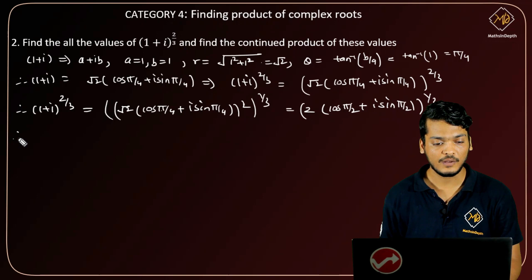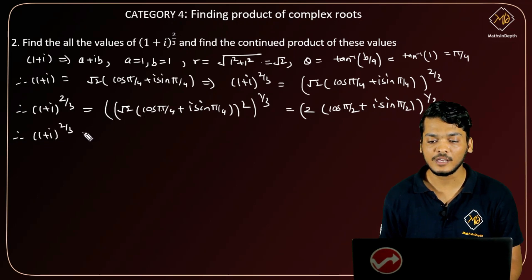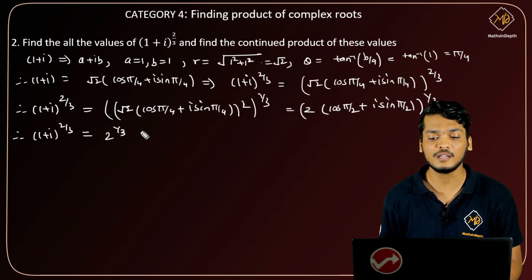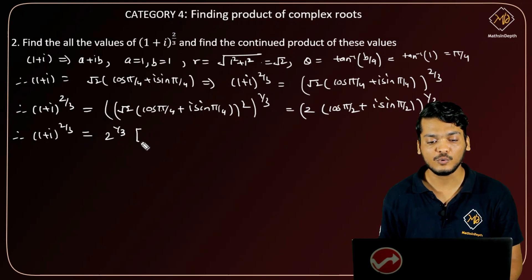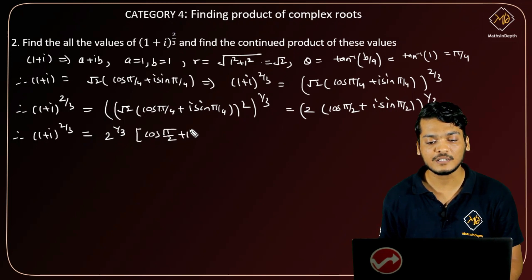Therefore (1+i)^(2/3) equals 2^(1/3) into (cos(π/2) + i·sin(π/2)).